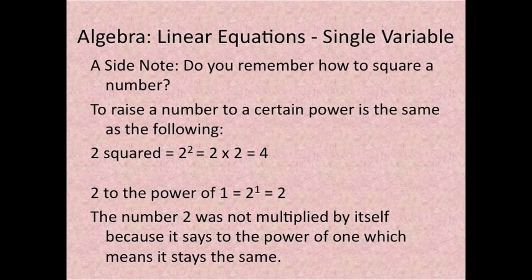2 to the power of 1 equals 2. The number 2 was not multiplied by itself because it says to the power of 1, which means it stays the same.